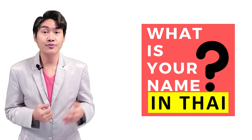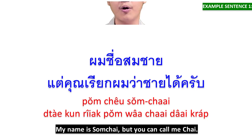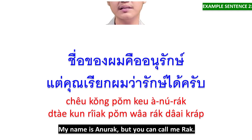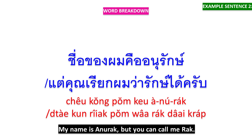At the next part, you will learn how to tell your real name and your nickname in the same sentence. If you are male speakers, you can learn from these examples: ผมชื่อสมชาย แต่คุณเรียกผมว่าชายได้ครับ — ผมชื่อสมชาย means 'my name is Somchai', แต่คุณเรียกผมว่าชายได้ครับ means 'but you can call me Chai'. ชื่อของผมคืออนุรักษ์ แต่คุณเรียกผมว่ารักษ์ได้ครับ — my name is Anurak, but you can call me Rak.